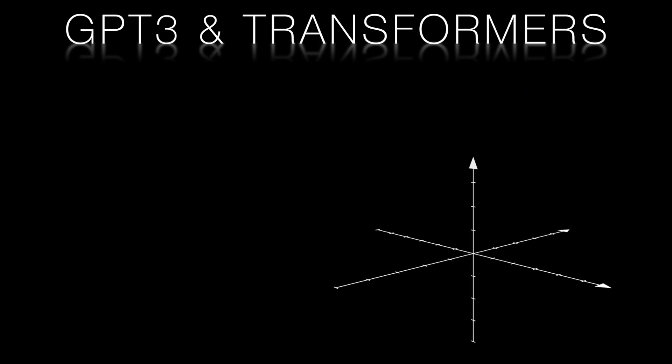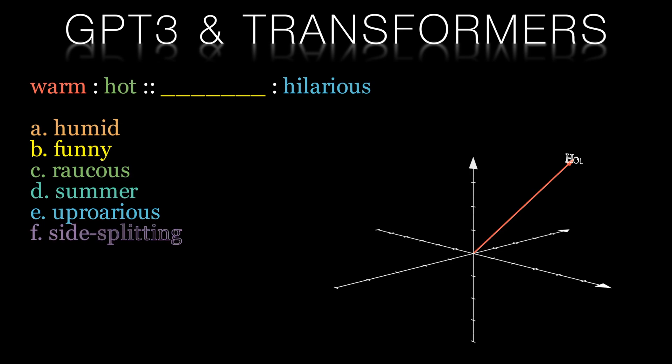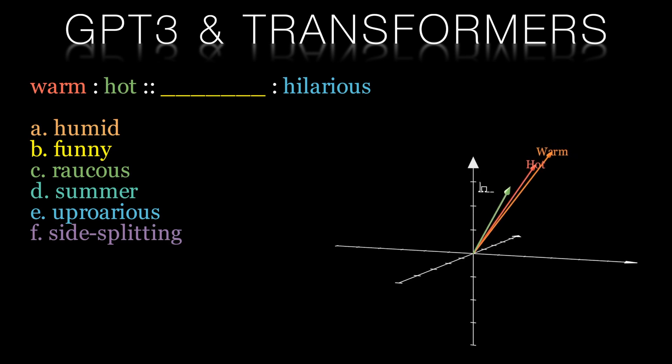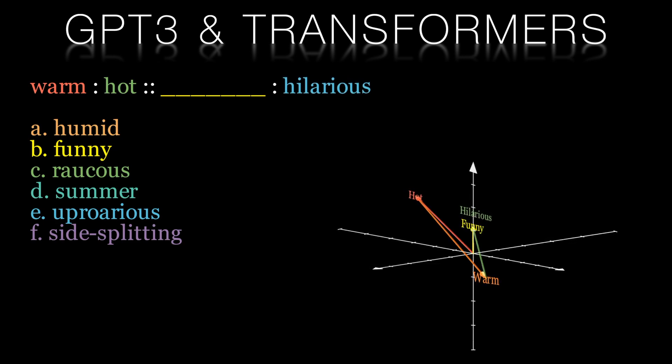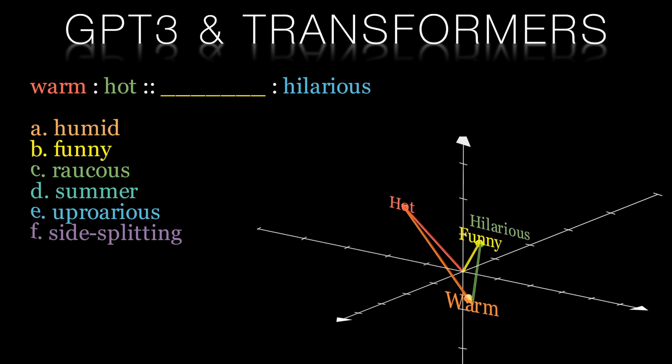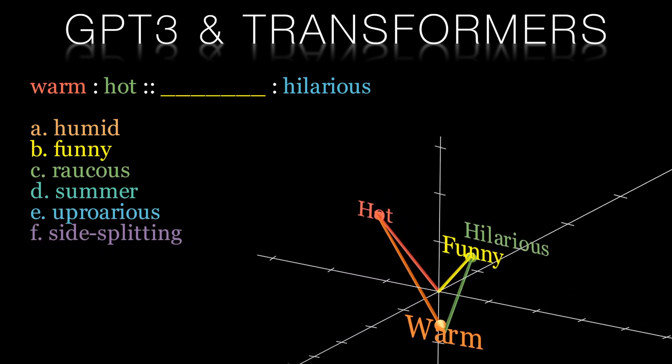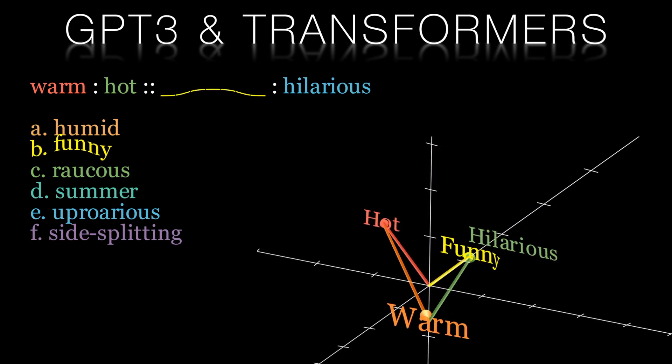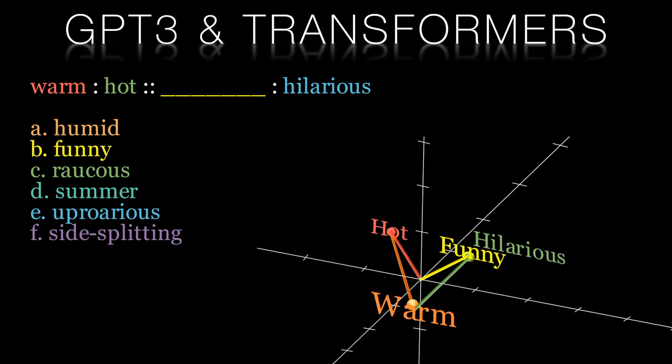We then looked at word embeddings, a key component of Transformers. We saw that we could represent words as dense numerical vectors. These vectors typically have around three to four hundred elements, and these encodings contain the attributes of the word including its meaning. To demonstrate this, we performed arithmetical operations on these numeric word vectors. We used word analogy puzzles such as this one where we need to solve for the missing word. Our word encoding had a sufficiently strong grasp of semantics to be able to correctly identify funny as the correct answer.